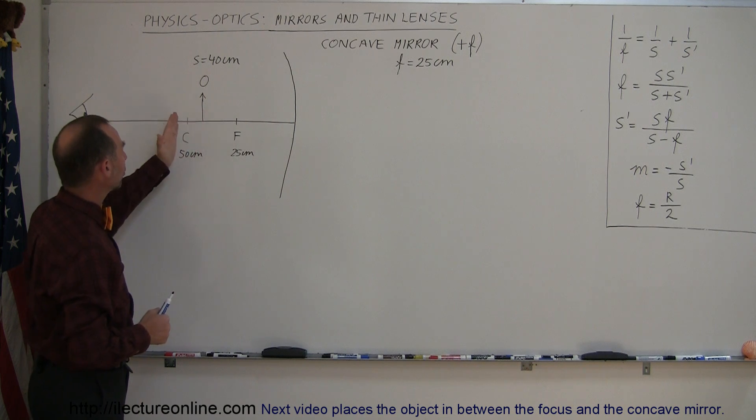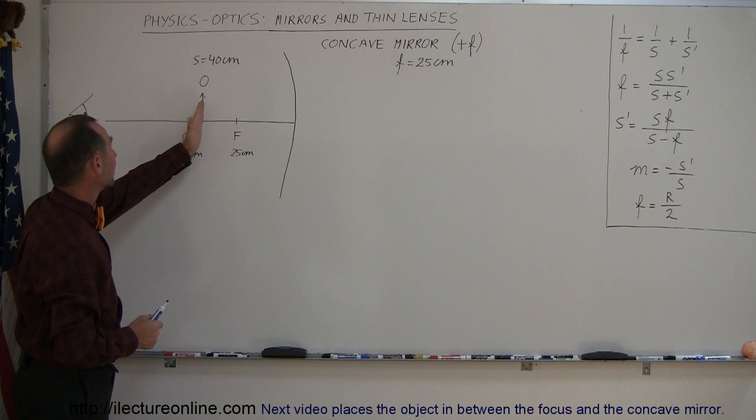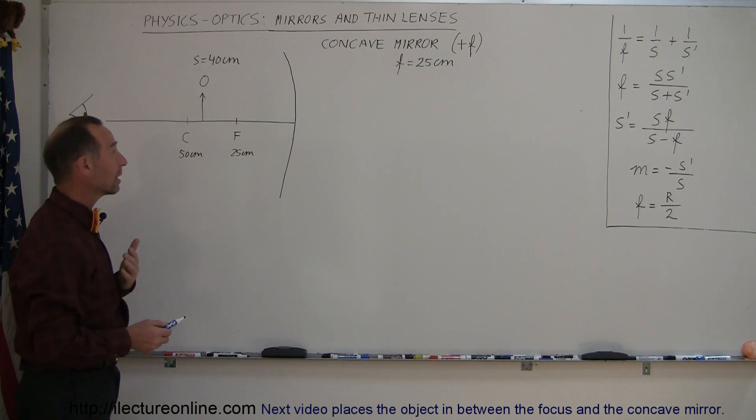We have now placed the object between the center of curvature and the focal point. The first video we had the object placed much farther away, so now we place it there. Now let's find out where the image is going to appear.